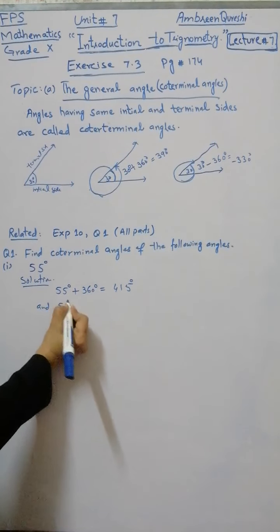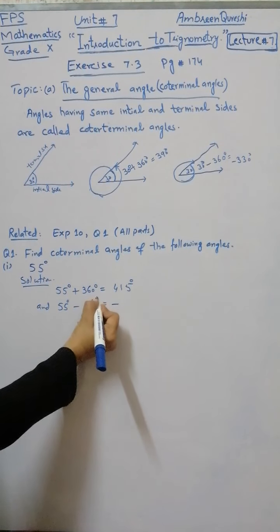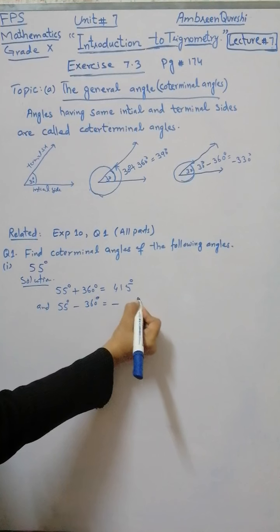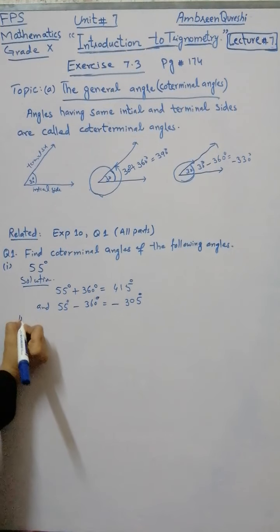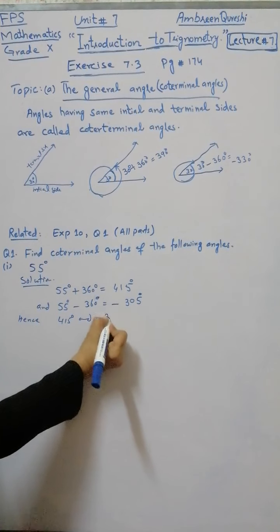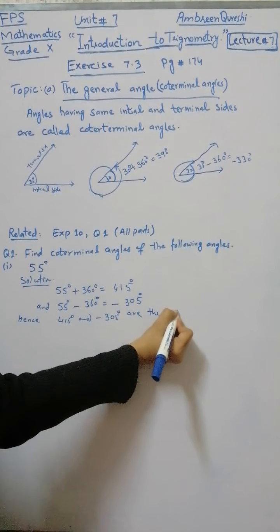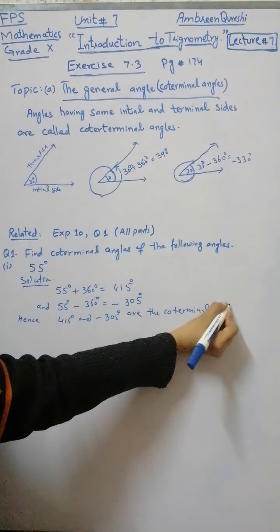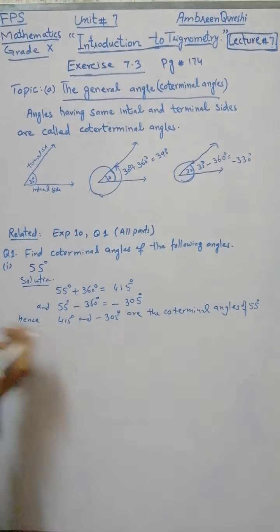The second co-terminal angle is found by subtracting 360 degrees. So 55 minus 360 gives minus 305 degrees. Hence, 415 and minus 305 degrees are the co-terminal angles. This is the first part.